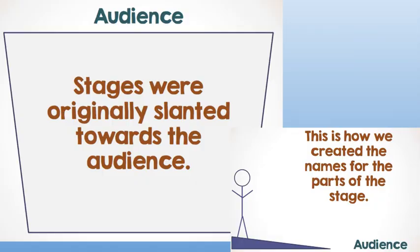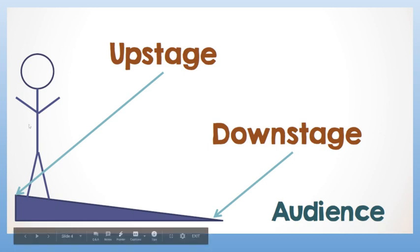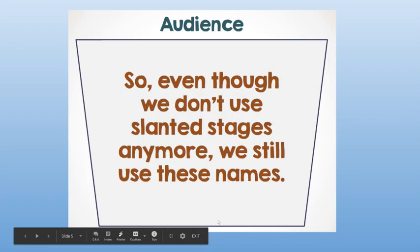Let's go ahead and look at what stages used to be. Stages used to be slanted and they were towards the audience, and that's how we created names for the parts of the stage. Right here we have upstage and downstage. The reason that it was up is because it was higher up the further back you were.